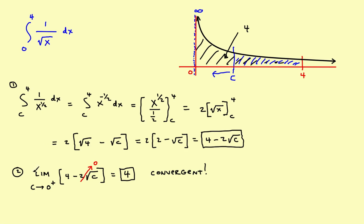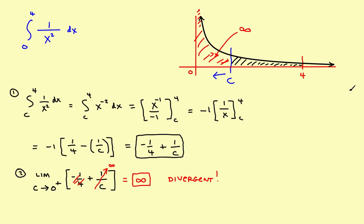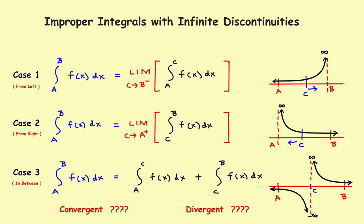In the first problem, the limit settled on a fixed number so the problem is convergent. In the second problem, even though the graphs look similar, the limit is infinite — it does not settle on a fixed number — so the solution is divergent and has no finite value. That's an example of the case 2 rule where the asymptote is on the left-hand side. In the next videos we'll look at case 1 and case 3, where the asymptote is on the right-hand side or in the middle.